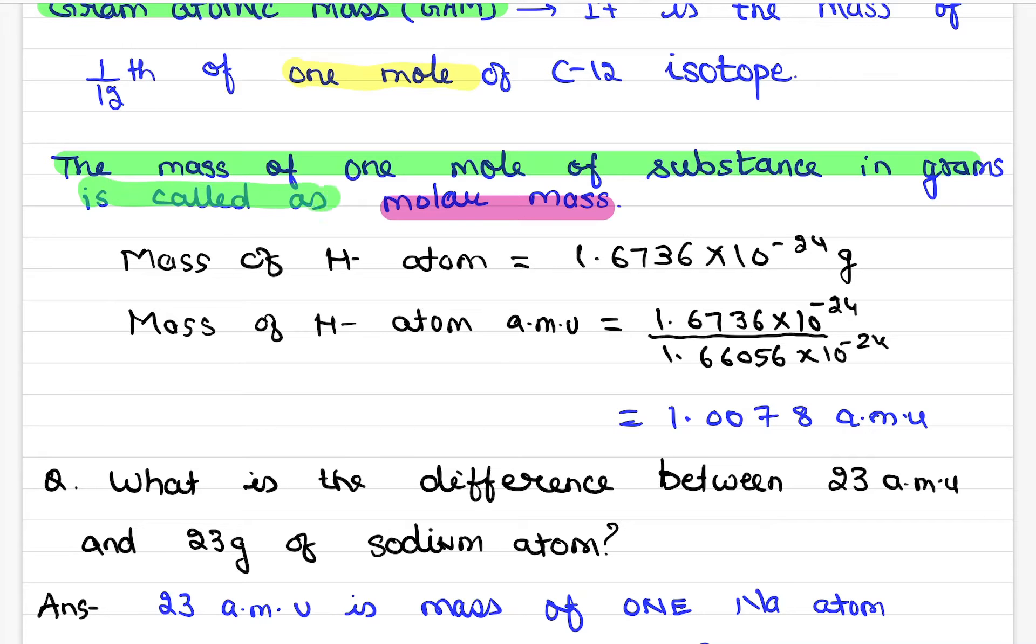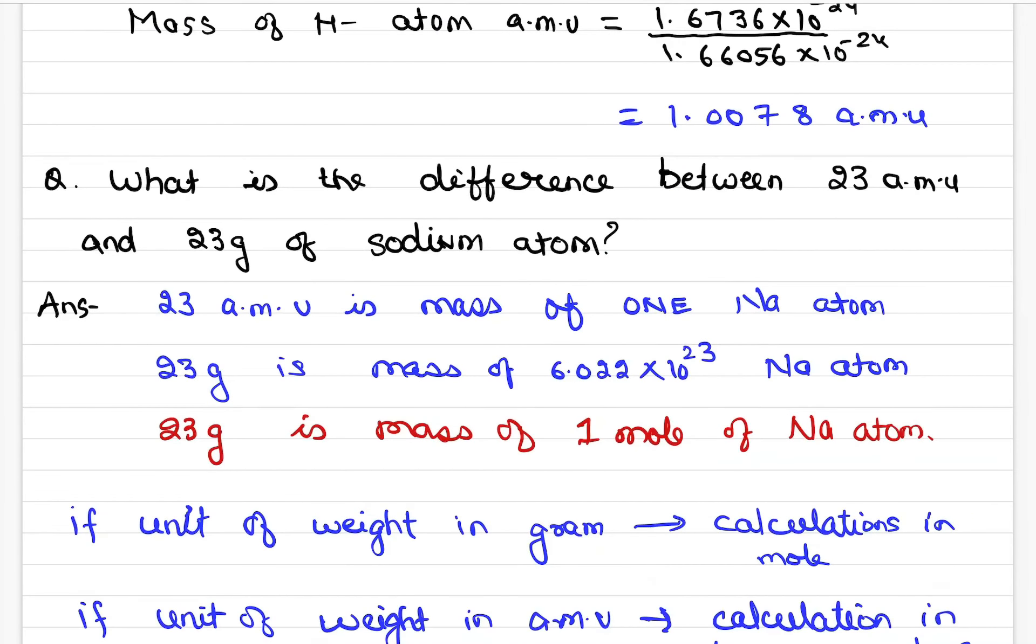Mole of 1 in grams is called molar mass. Now let's move on. Now 12 gram of carbon has 1 mole.